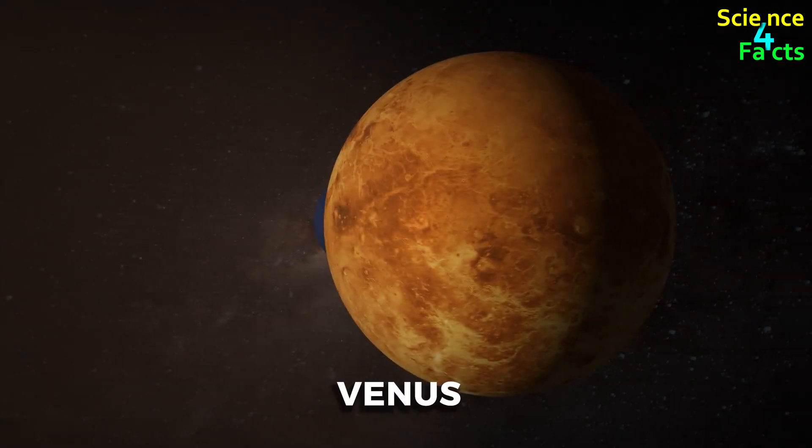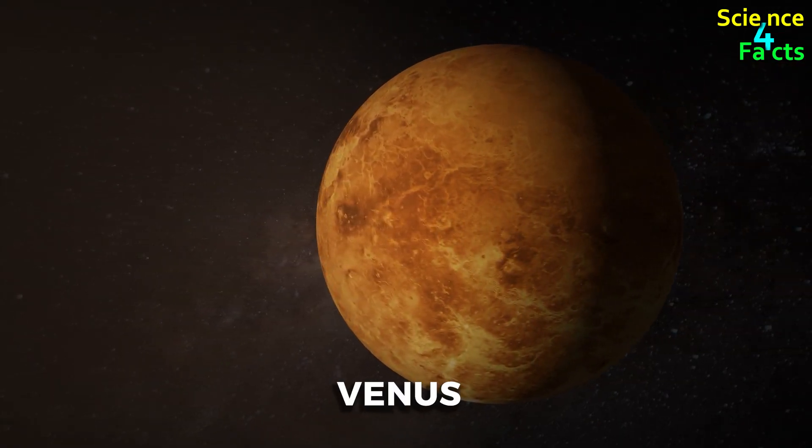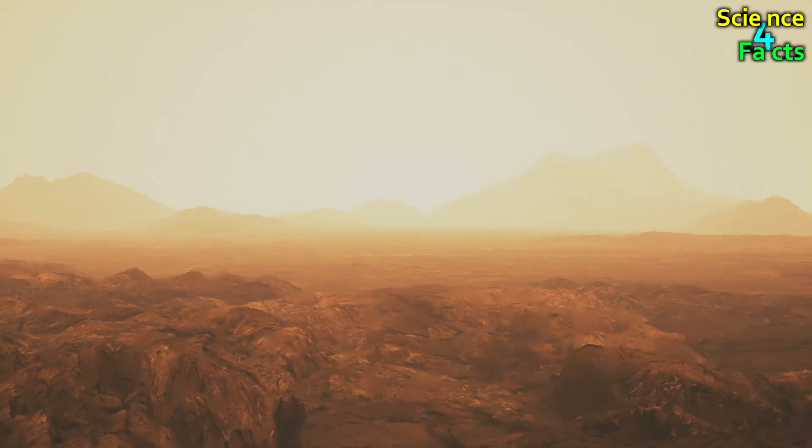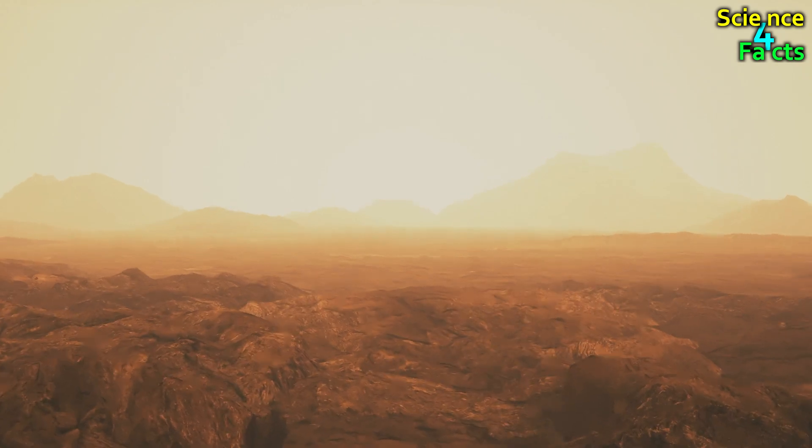On the other hand, Venus, the second planet, boasts a robust atmosphere, approximately 90 times thicker than Earth's. Consequently, when viewed from the outside, the surface of Venus remains obscure due to the thickness of its atmosphere.